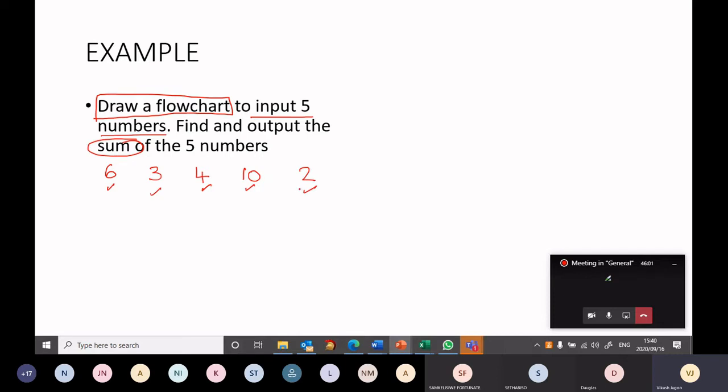So the user will input five numbers. You need to find the sum of the numbers. So you're going to take six plus three, that gives me nine. Nine plus four gives me thirteen. Thirteen plus ten gives me twenty-three, and twenty-three plus two will give me twenty-five. So this is what the flowchart wants you to do, to add up all the numbers and give you the sum.